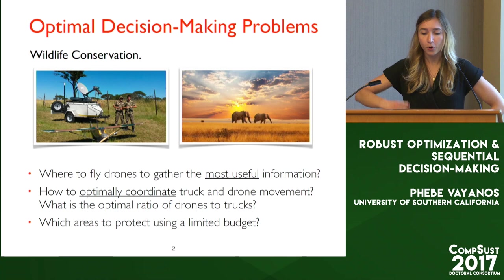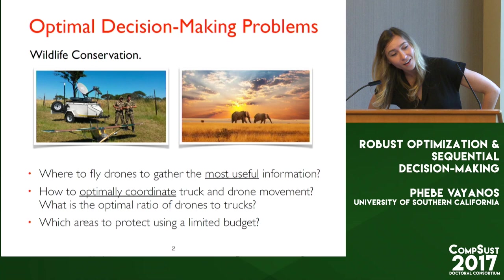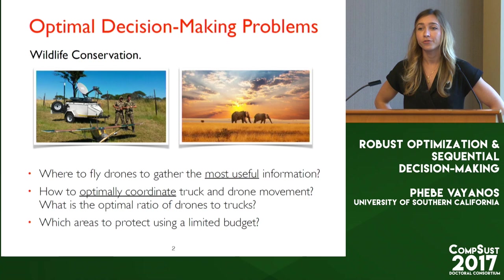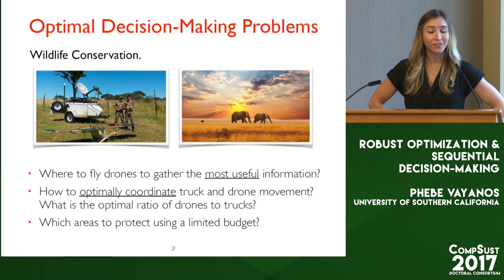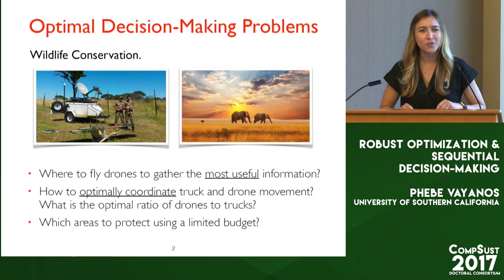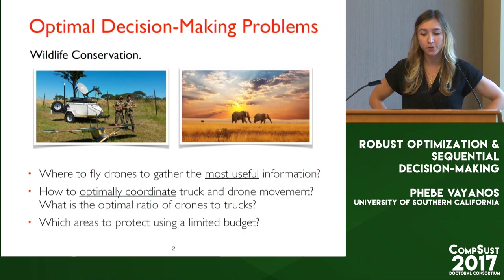Another problem would be related to what one of the students, Liz, was talking about yesterday. She had this problem in the context of conservation planning where she had drones at her disposal recording images of parks, and was able to use AI to automatically detect poachers and animals from her images. A natural question from an optimization side is: how should I be flying my drones to collect the most useful information? Should I be guiding my drones in a precise fashion to gather as much useful information as possible to ultimately catch the poachers?